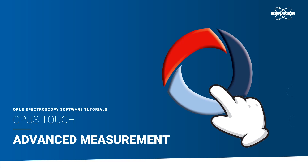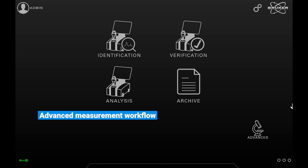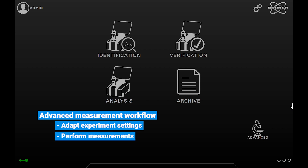In this video you will learn how to use the Advanced Measurement Dialog. The Advanced Measurement Dialog is a tool that can be used for the adaptation of measurement experiment settings, which are stored in files with the extension XPM. It can also be used to perform measurements and to align certain accessories, such as the drift module.